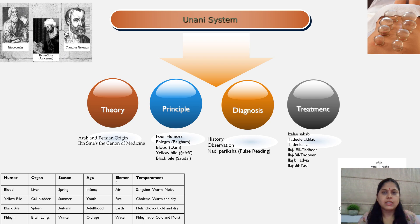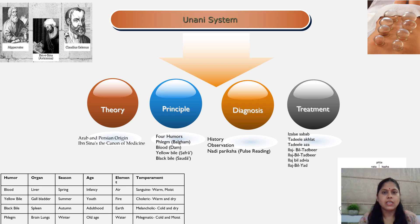After diagnosing the disease, treatment involves either eliminating the cause (Izale Sababh), normalizing the humors (Tadile Akhlath), or normalizing the tissues (Tadile Aza). The method of treatment involves regimental therapy (Ilasvil Tadbir), pharmacotherapy (Ilasvil Adviya), or surgery (Ilasvil Yad). Under regimental therapy, use of exercise, change in climate, massage, venesection, leeching, cupping, or diet are included. Under pharmacotherapy, plant, animal, and mineral origin drugs — either alone or in combination — are prescribed. Under surgery, certain surgical interventions are part of the treatment.